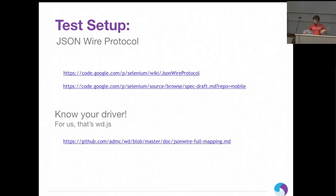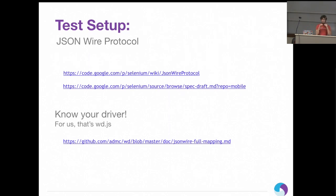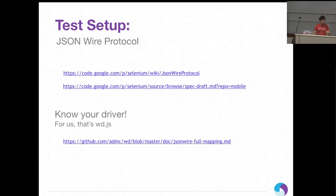The most important thing is to familiarize yourself with the options available for testing. I've linked the Selenium JSON wire protocol and the mobile JSON wire protocol. Looking through the giant list of API endpoints will help you see how it works. Even if you find an example in a language you're not familiar with, it'll be clear which endpoints it touches. So first: know the protocol — you don't have to memorize it, just be familiar with what's available.